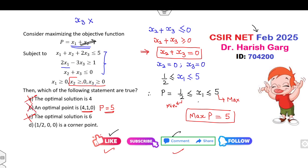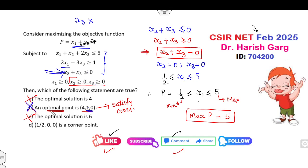Why is option B wrong? It is very simple. What is the meaning of an optimal solution? It must satisfy all the given constraints. Checking the third constraint: x2 plus x3 at point (4,1,0) is not less than or equal to 0 — it is not satisfied. So this is not a feasible solution, and once it is not a feasible solution, it is not an optimal solution. The only answer left is D.